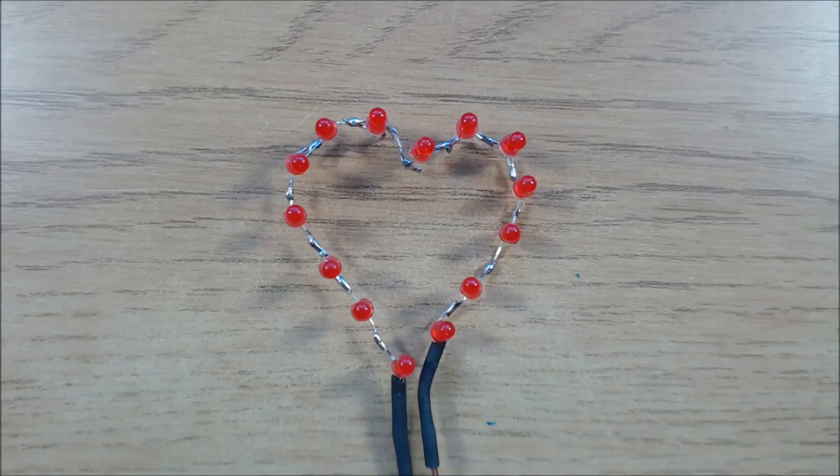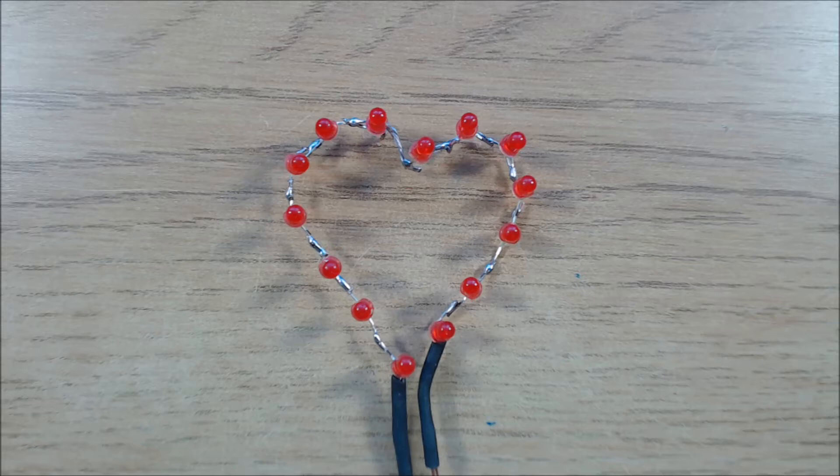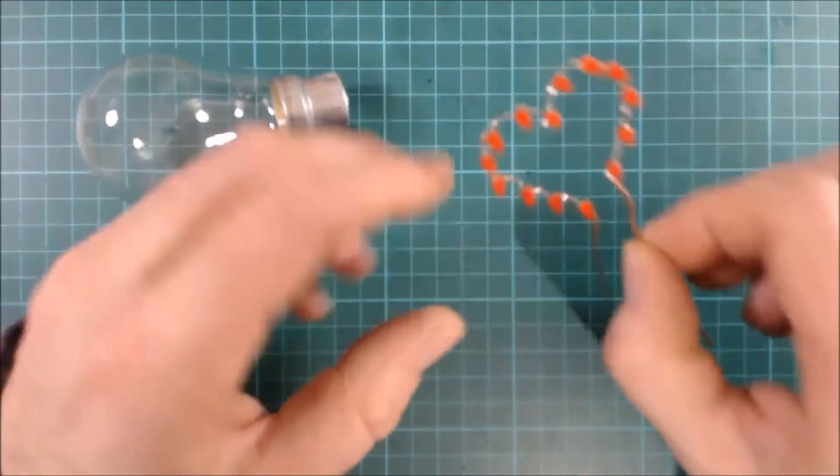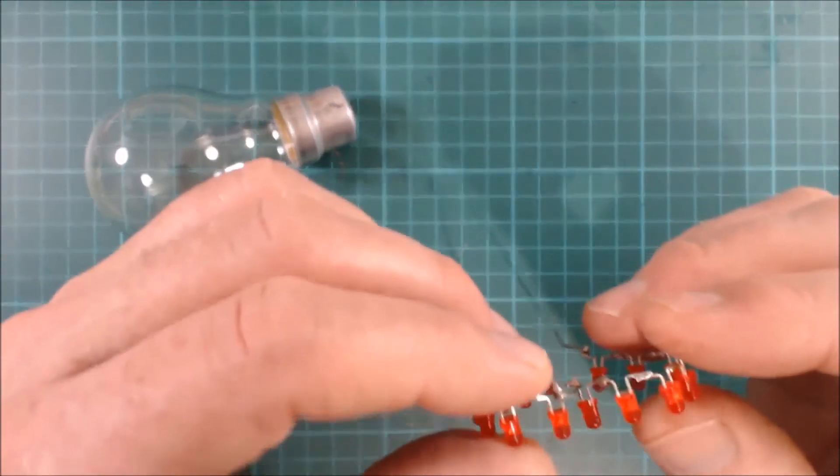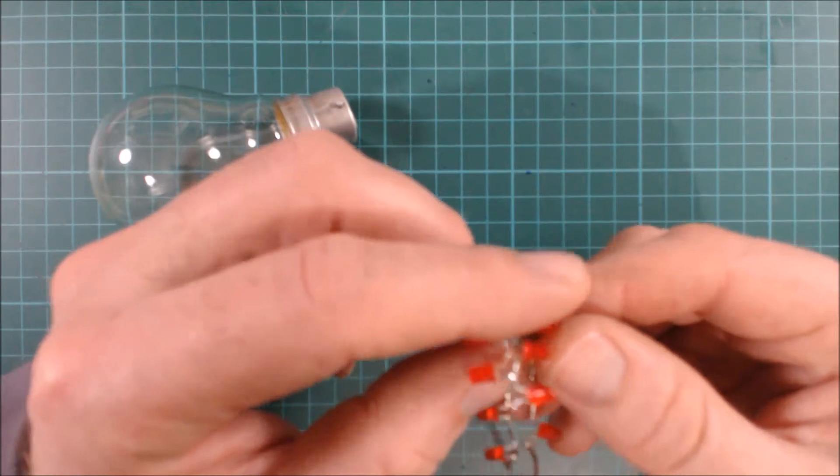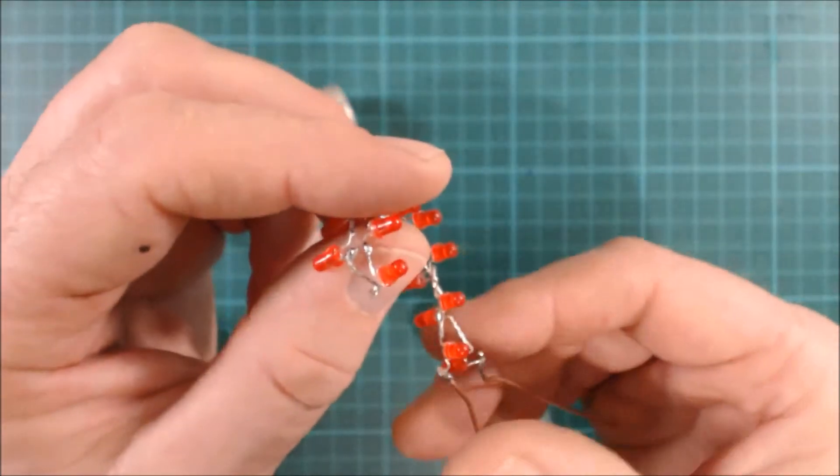The next stage is to put the LED heart into the light bulb, but it's a good idea to test it first. You can find information about how to power it later in the video. To put the LED heart into the light bulb, we fold it in half making use of the flexible link wire and carefully manipulate it into the bulb.